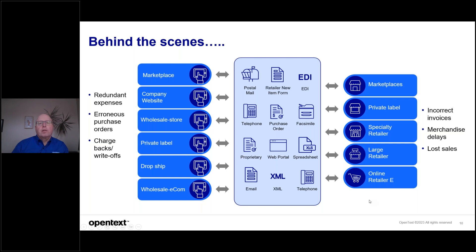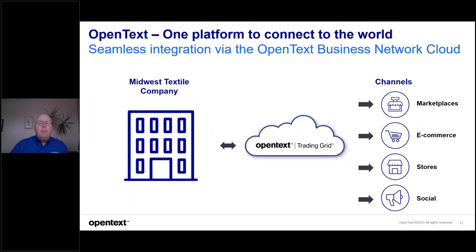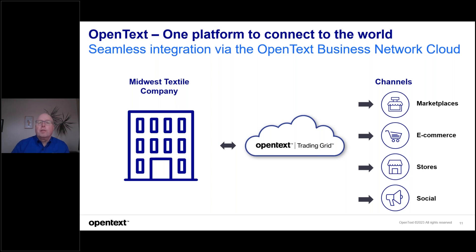Committed to the omnichannel approach, the company realized they needed to make changes to support growth. They needed a solution that would quickly integrate and leverage their backend processing systems, scale and expand as they grew, and a global provider since global expansion was on the horizon. This is when they partnered with OpenText. We offered a solution that allowed the company to connect to all their channels — one connection to process and fulfill orders regardless of the particular channel's requirements — giving them a platform to execute their omnichannel strategy and connect to the world.